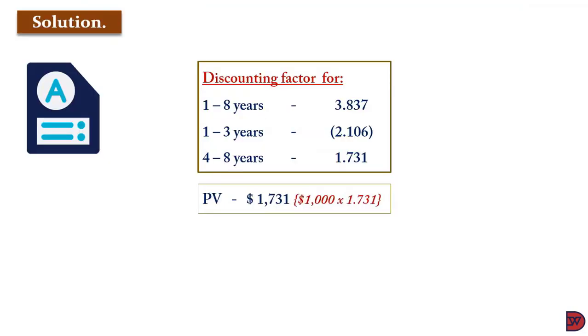So the present value will be $1,731, which is $1,000 receivable every year after the 3rd year for 8 years, multiplied by the annuity factor.